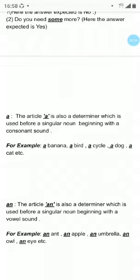Dear students, you already know what are vowel sounds and what are consonant sounds. There are five vowels: A, E, I, O, U. The sounds beginning from these vowels are vowel sounds. For example, ant — the word ant is starting from an A sound, and A is a vowel, so it is a vowel sound. The remaining sounds are consonant sounds.